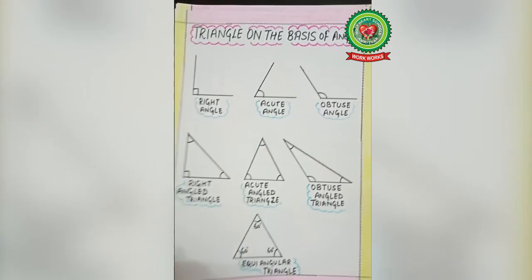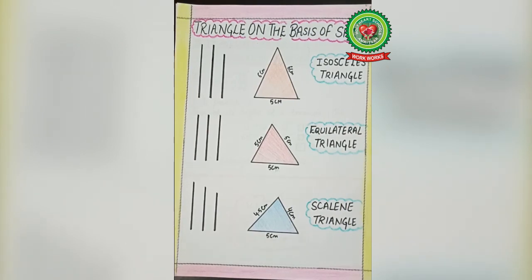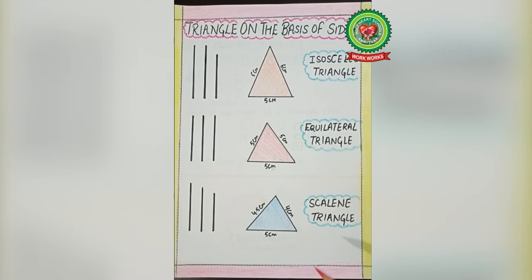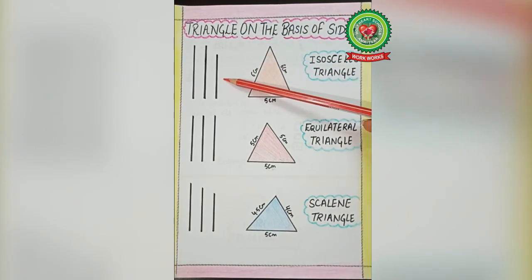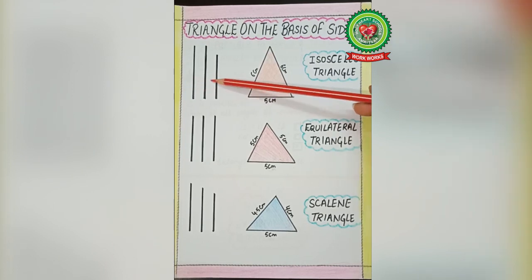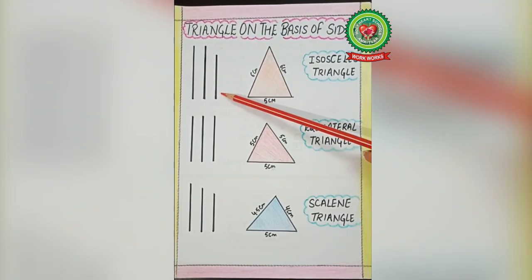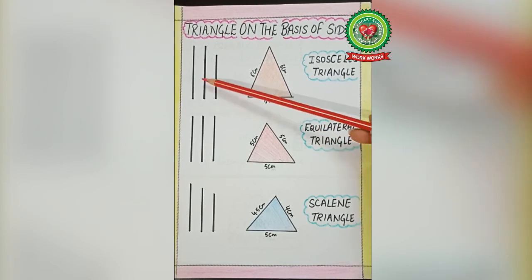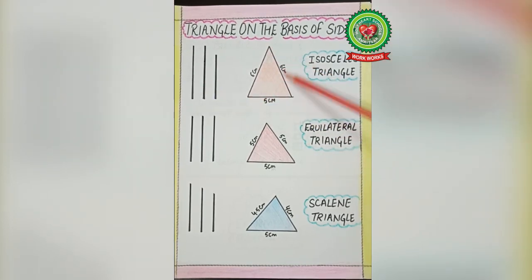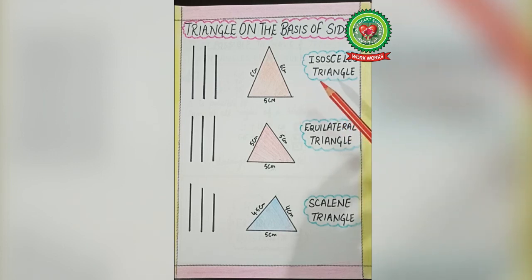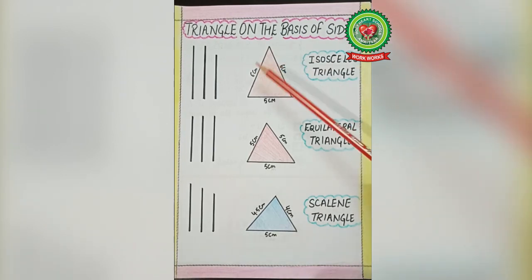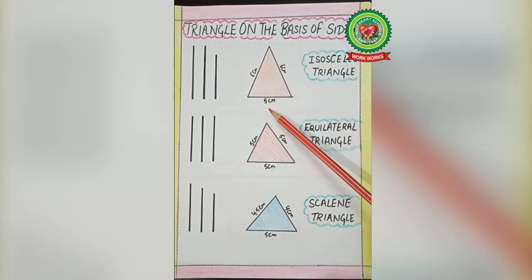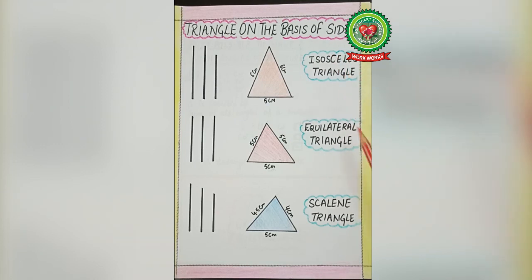Now we will classify triangles on the basis of their sides. Here you can see two sides of the same length and one side of a different length. If we form a triangle with these three sides, we call it an isosceles triangle — a triangle in which two sides are the same and one is different.